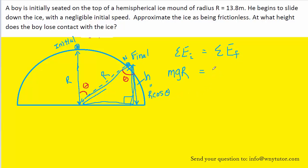So, to recap, the final total energy will consist of both kinetic, because the boy is moving, and gravitational potential energy. Let's go ahead and substitute in the expressions. Once again, note that the height for the final position is the radius times the cosine of the angle. Now, mass appears in all three terms of this equation, so we can go ahead and cancel it.